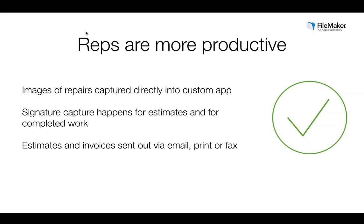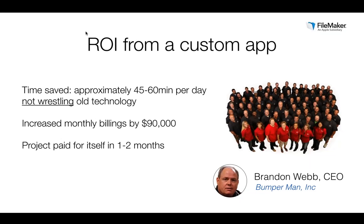Reps are more productive — they capture photos of damaged bumpers and get signatures right on iPads from managers to approve things. Estimates and invoices can be sent to auto dealerships via email, print, or fax. With Bumperman, a fax service is used: the PDF is emailed to a service that dials the phone and transmits it. Some businesses still use faxes, so some days you have your foot in the new tech and some days in the old. I'd like to introduce Brandon Webb — do we have him on the call?